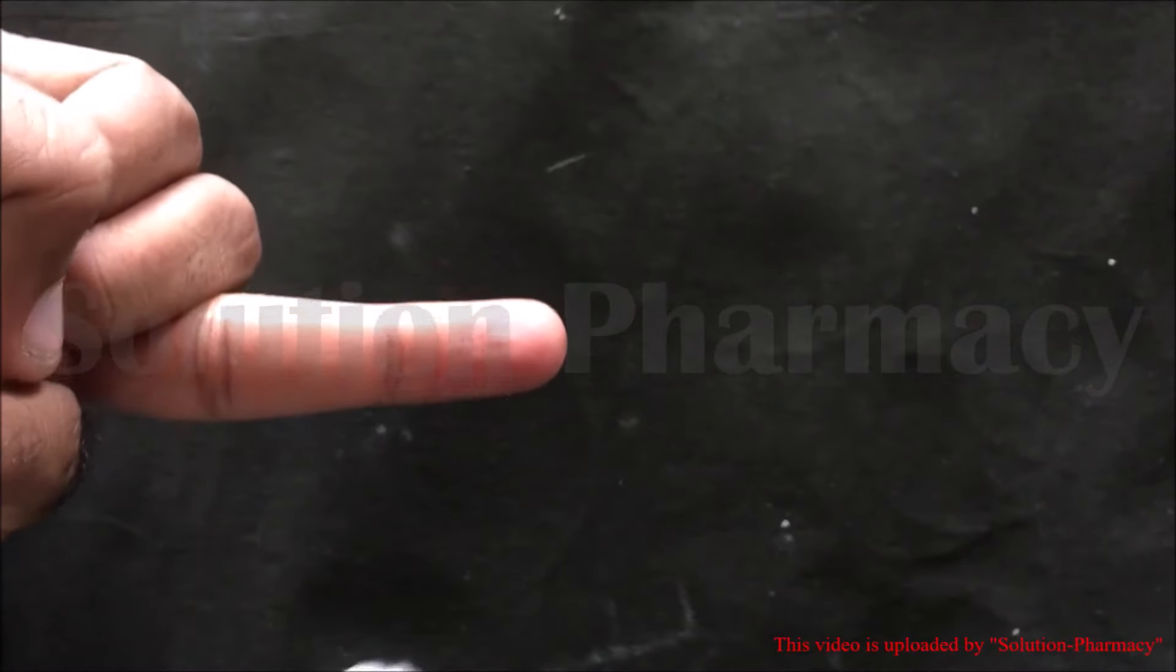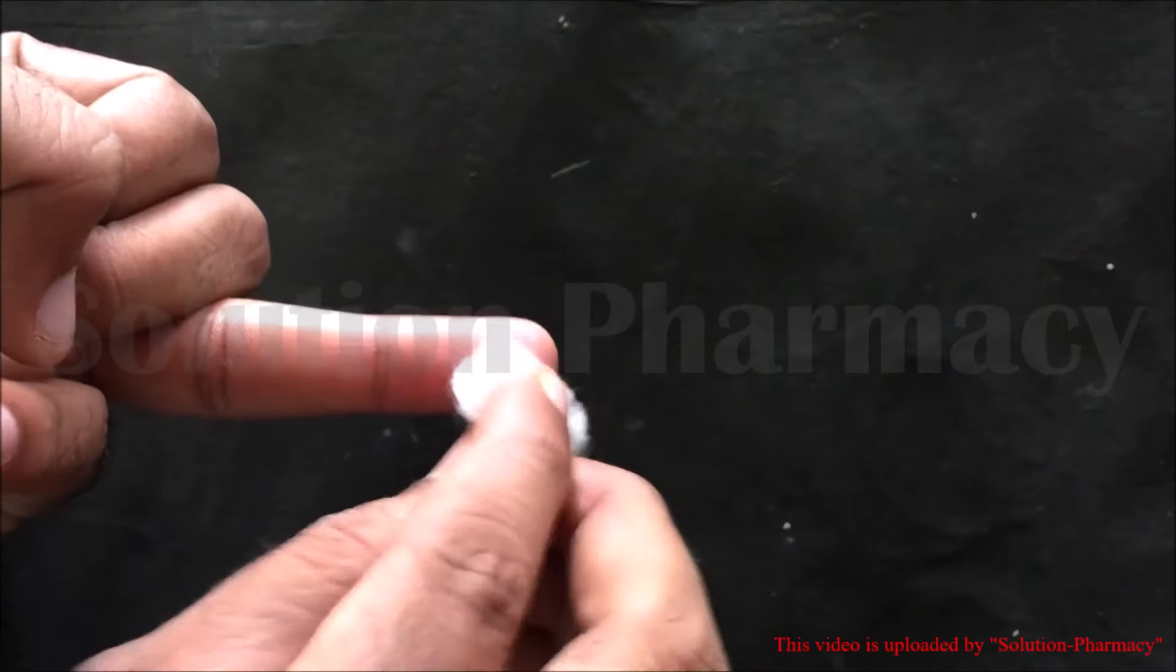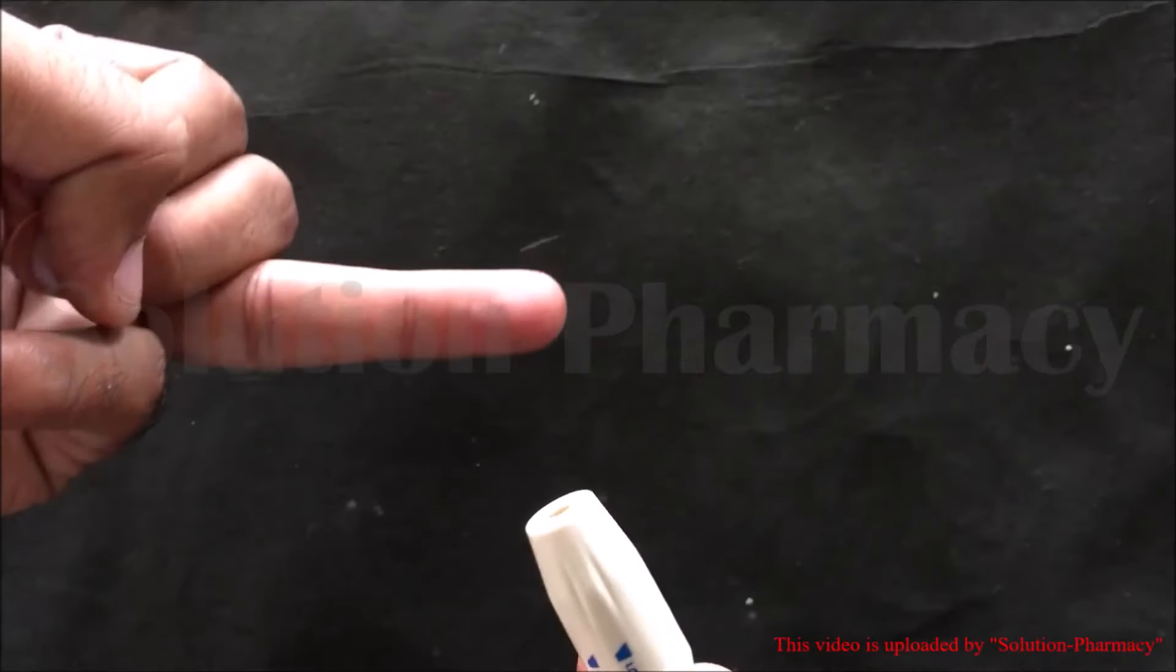First of all, sterilize your fingertip with cotton swab soaked in spirit or 70% ethanol, and then set the pricker pen depth containing sterile lancet.